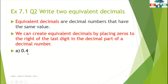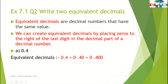Here we have 4, so we will put 0 after 4. The equivalent decimals for 0.4 are 0.40 — this is the first equivalent decimal — and 0.400 — this is the second equivalent decimal for 0.4. It is very easy. You have to just put zeros after the last digit in the decimal part. Here we have to write two equivalent decimals, that is why I am writing two times.